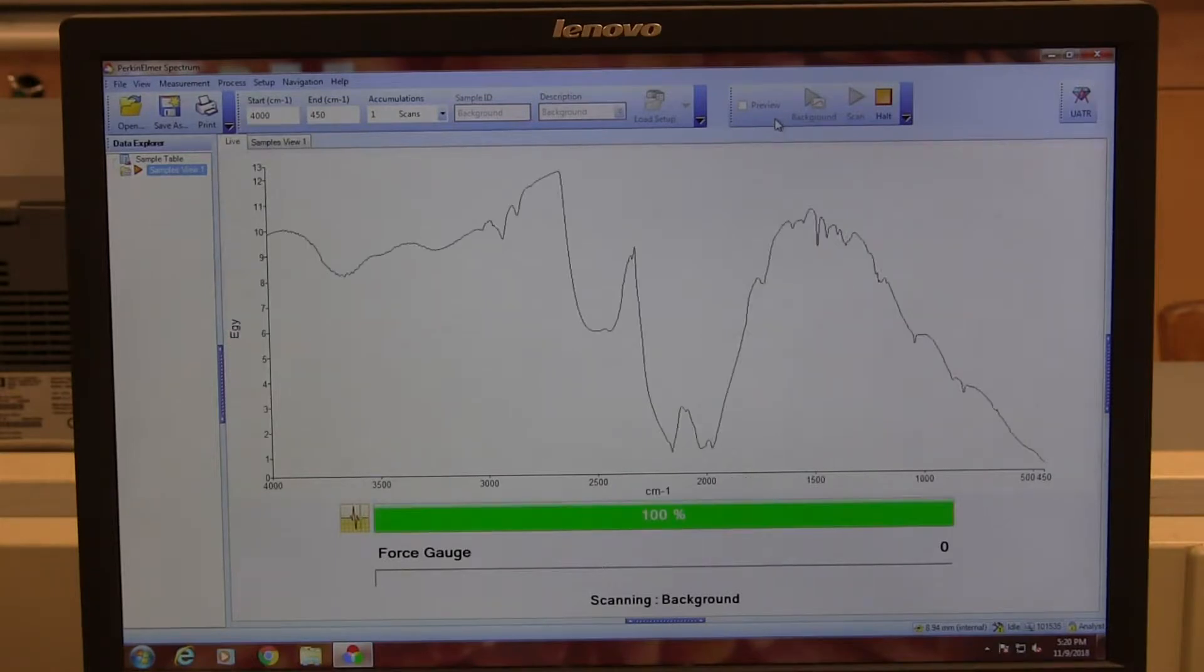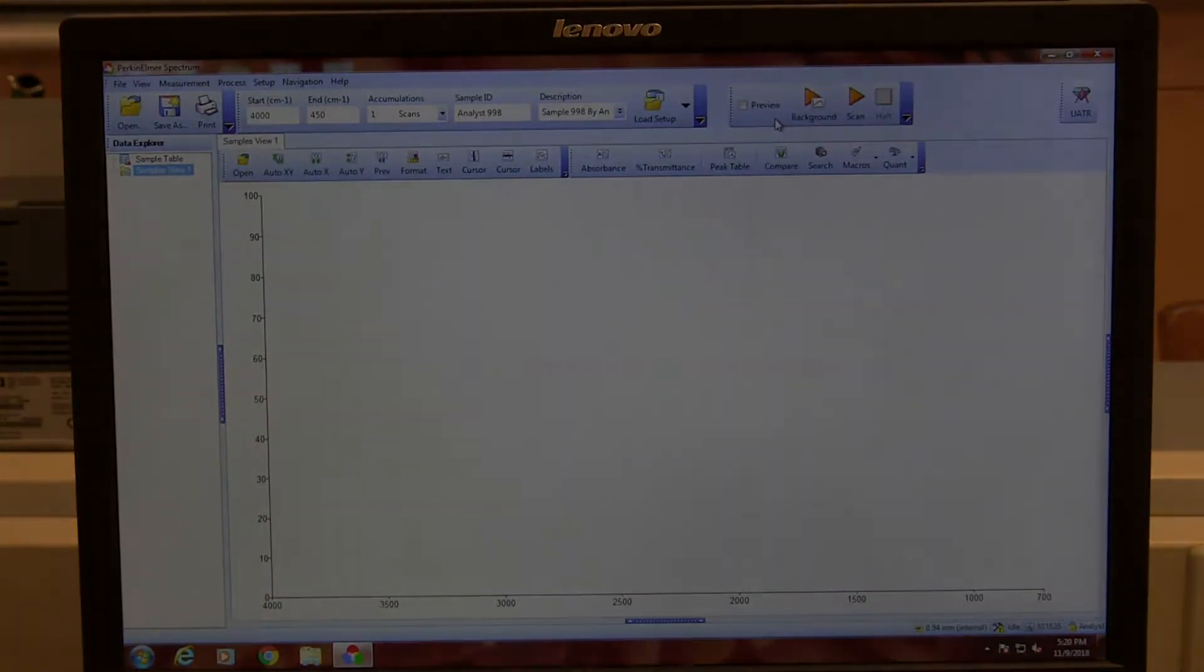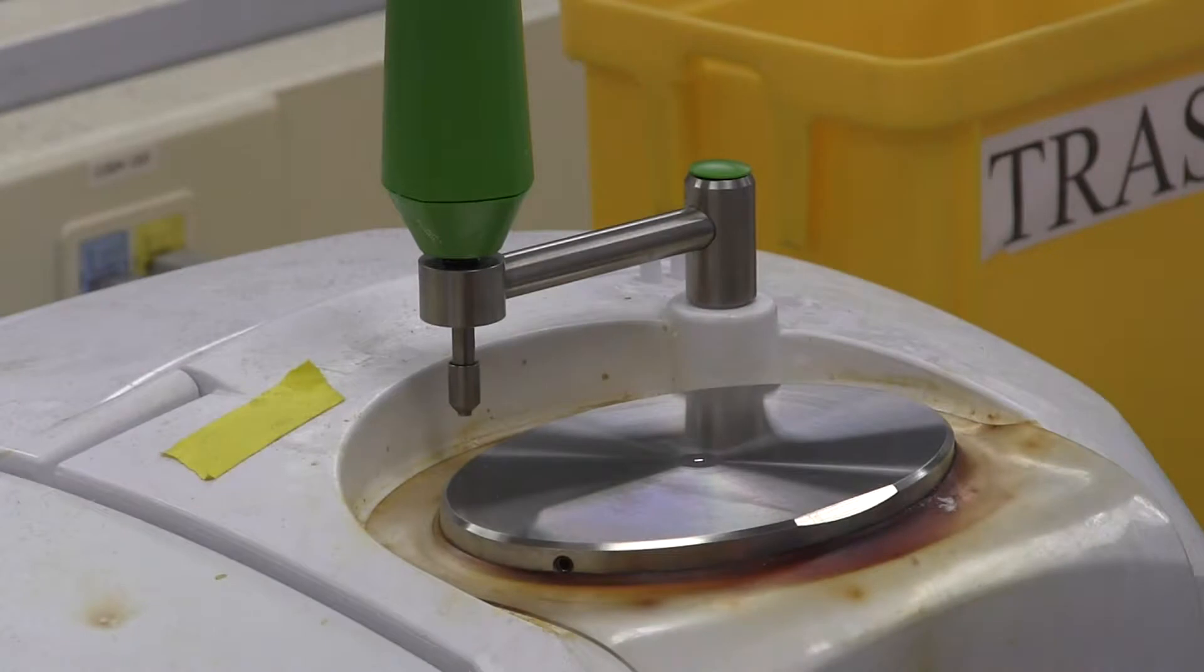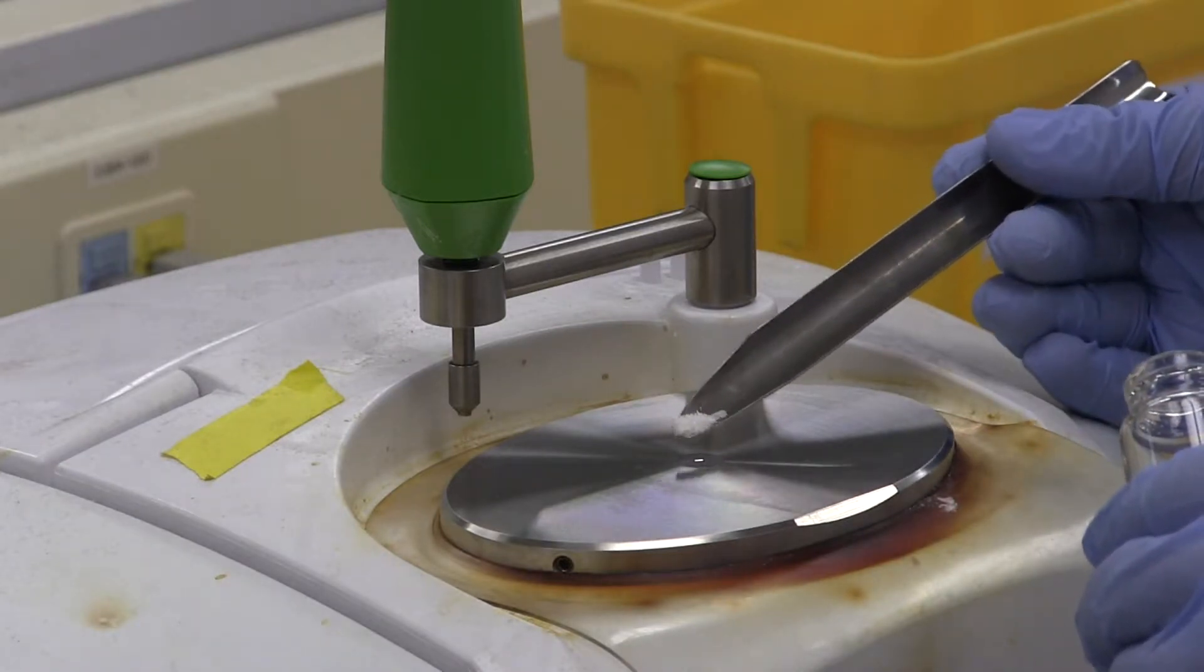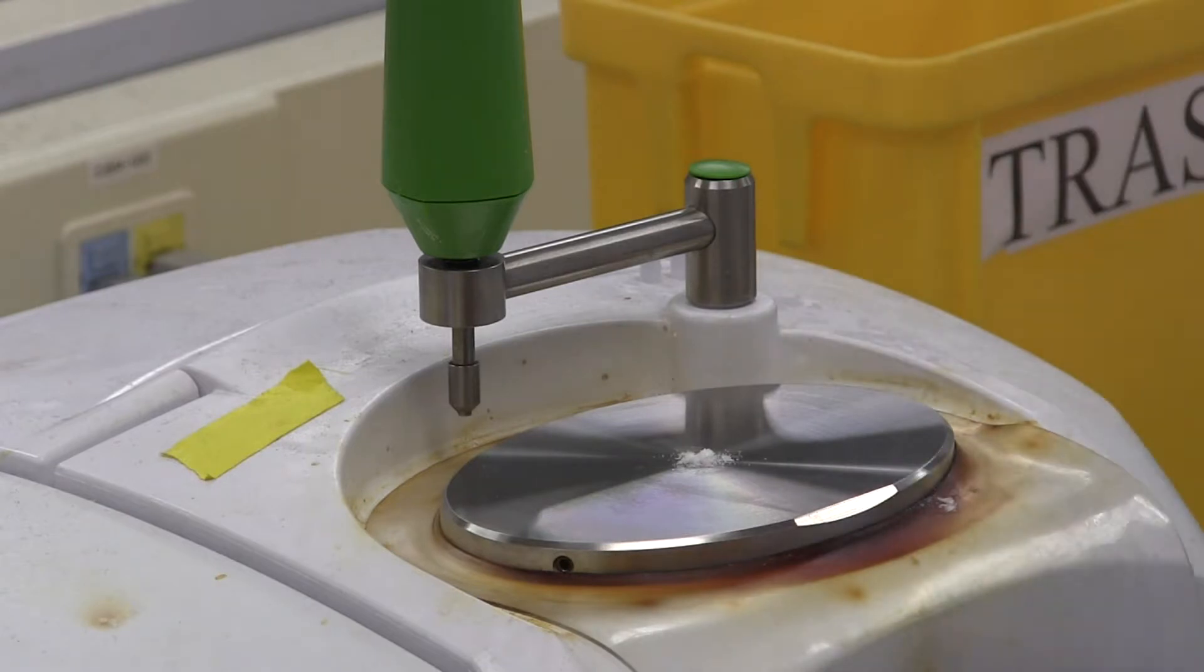Now we can begin to add some of our sample to the spectrometer. When adding the sample to be analyzed, it is important to avoid using too much material. Just make sure to cover the crystal with sample and turn the knob on the arm so that it presses firmly against the sample.